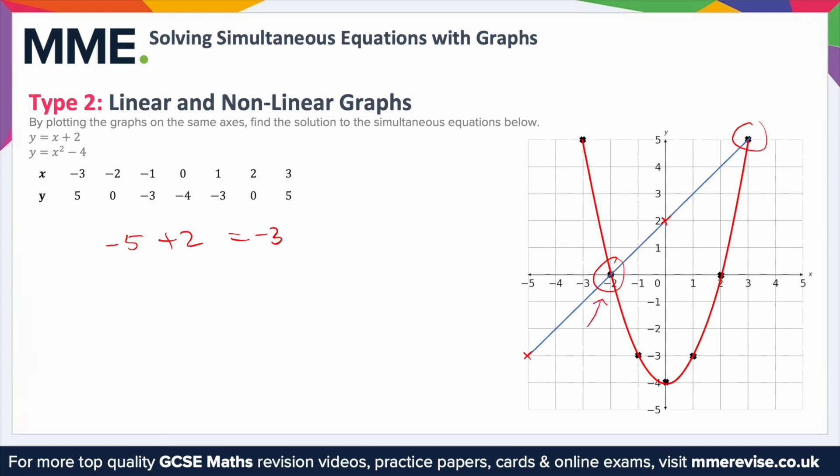This first point is relatively easy to read off because it's on the x-axis and we can see that it's at minus 2. So we know that that is the point minus 2, 0. There's one solution.